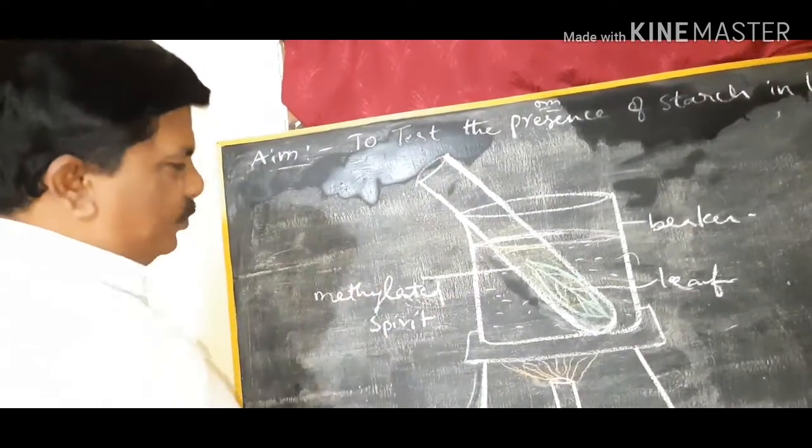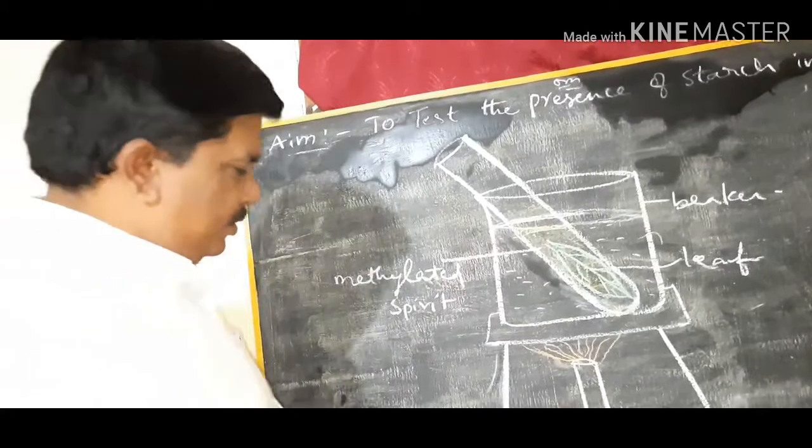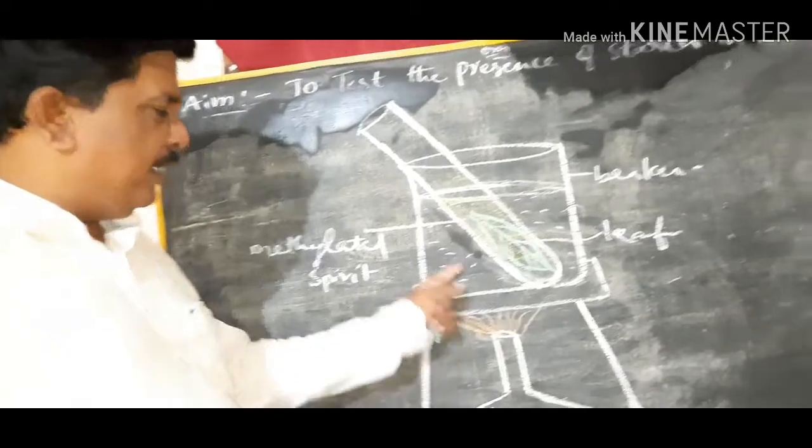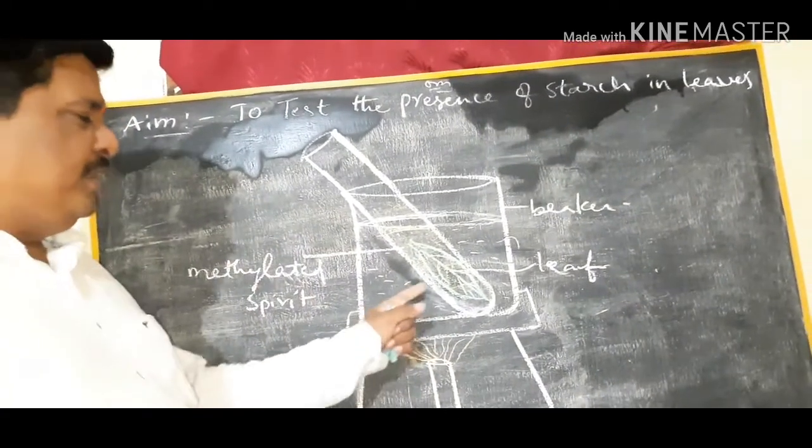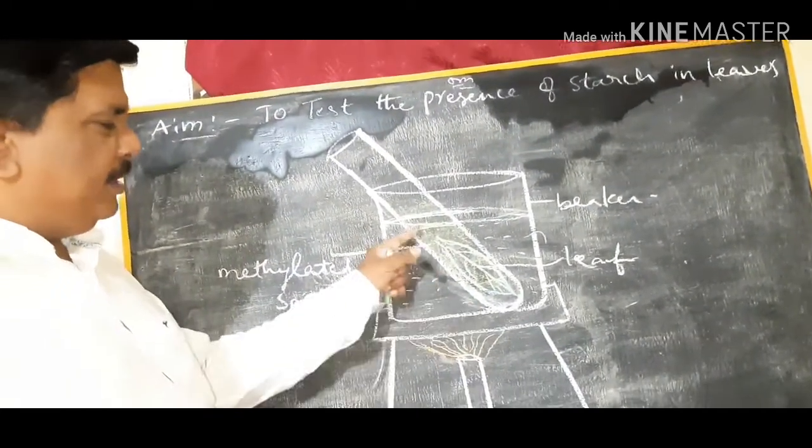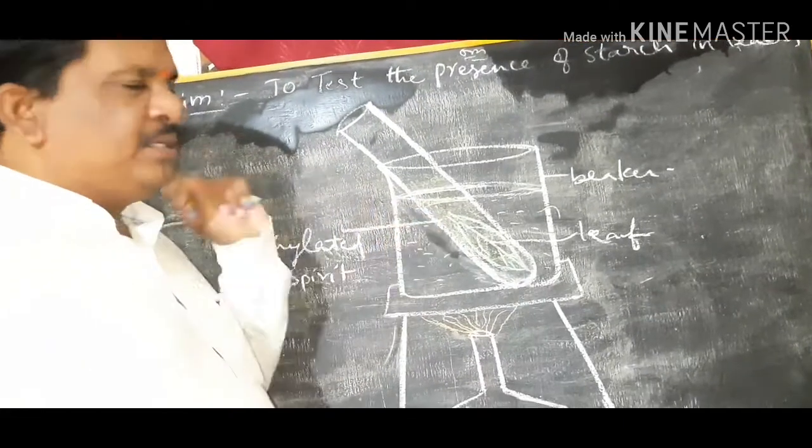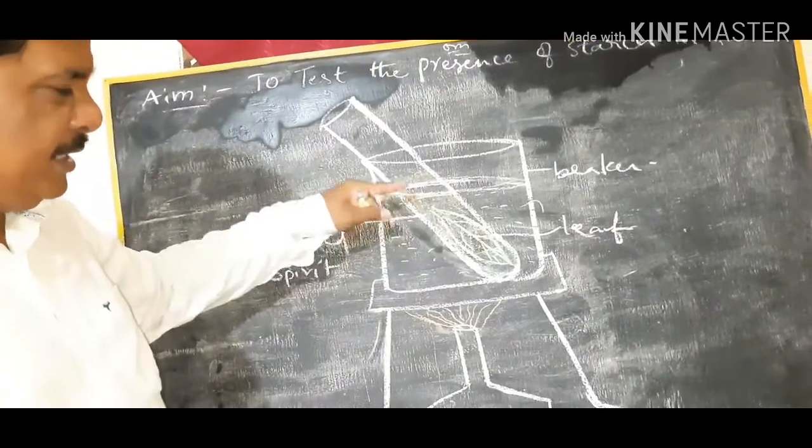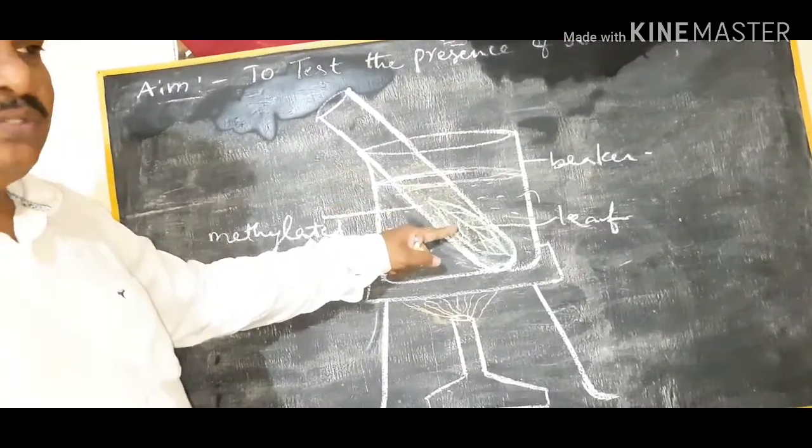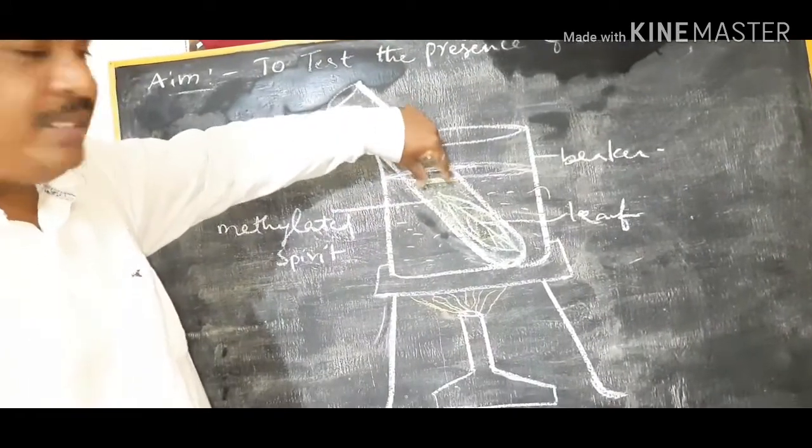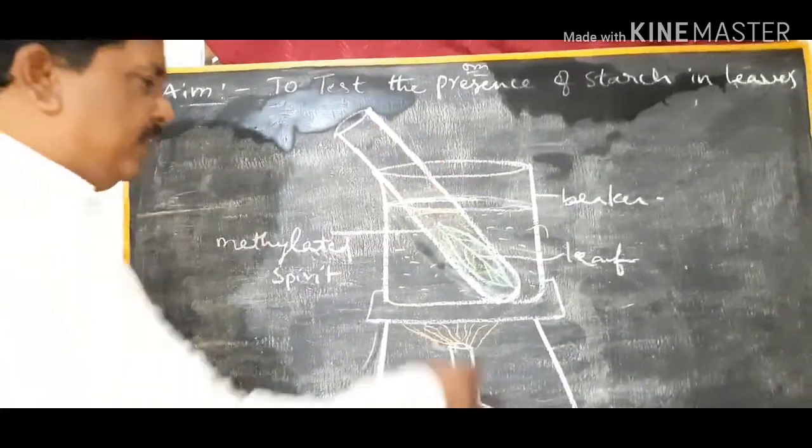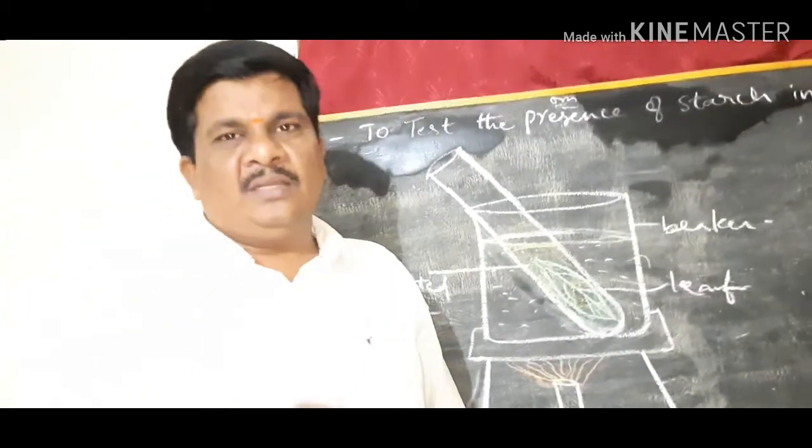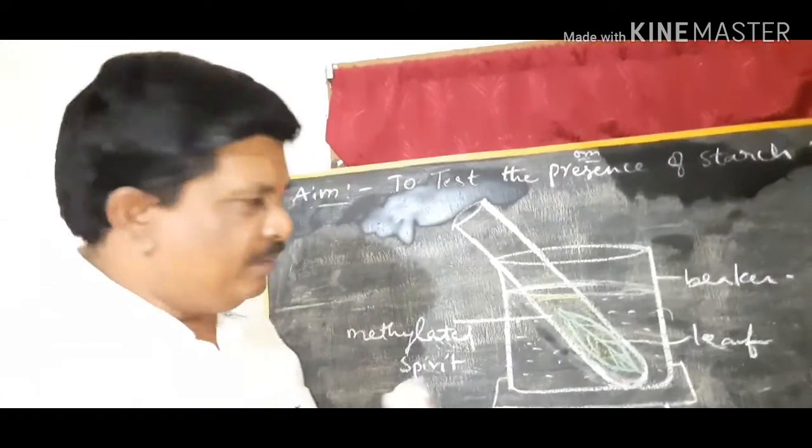Now keep this test tube in the beaker which contains water. We have to boil this water using a Bunsen burner. When water gets heated, then immediately the test tube gets heated. When the test tube gets heated, the alcohol or spirit present in the test tube also gets heated. When the methylated spirit is heated, the leaf loses color. The methylated spirit or alcohol bleaches the color of the leaf, and it turns pale.